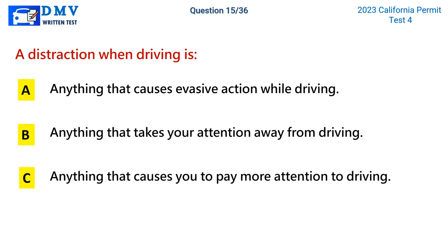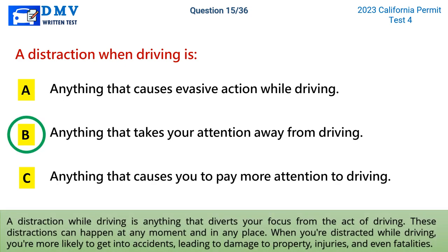Question 15: A distraction when driving is. A) anything that causes evasive action while driving, B) anything that takes your attention away from driving, C) anything that causes you to pay more attention to driving. The correct answer is B. A distraction while driving is anything that diverts your focus from the act of driving. These distractions can happen at any moment and in any place. When distracted while driving, you're more likely to get into accidents, leading to damage to property, injuries, and even fatalities.